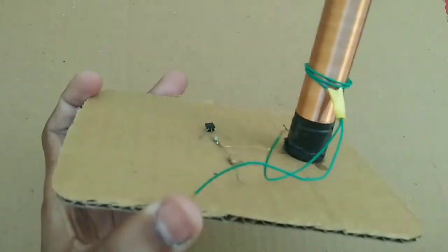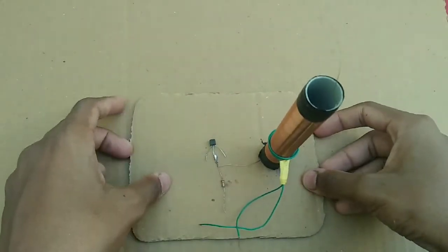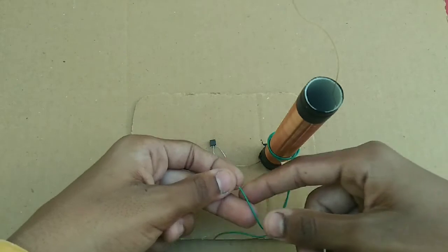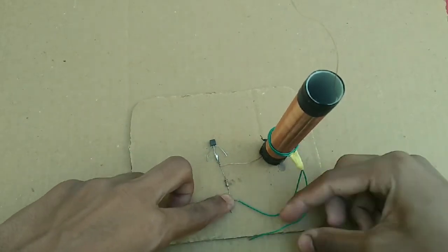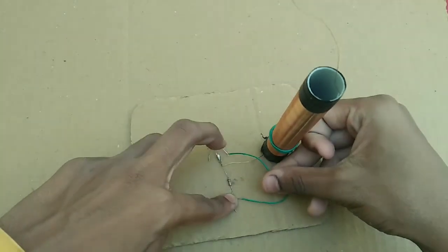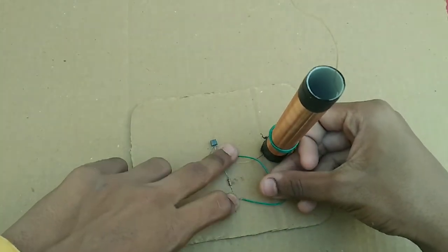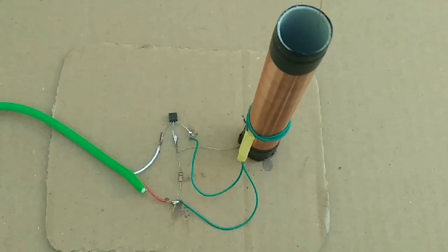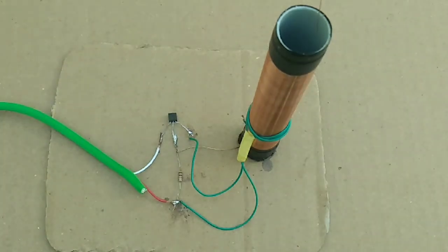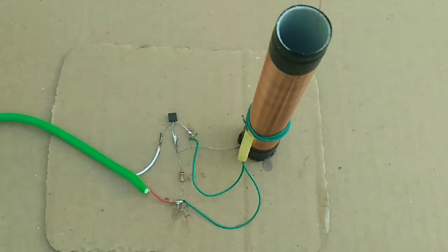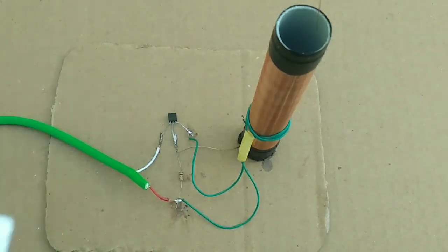Now solder the coil wires - one wire to the transistor third point, the other to the resistor last point. Connect the resistor end point to the transistor first point. For power, I'm using a 5.5 volt adapter with positive and negative connections.